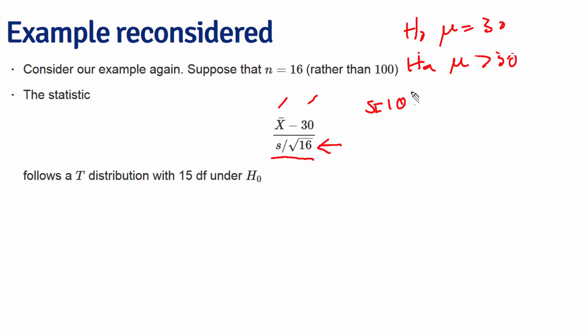This test statistic, how many estimated standard errors from the hypothesized mean the sample mean is, follows a t-distribution with 15 degrees of freedom in this specific case.